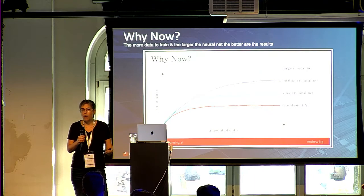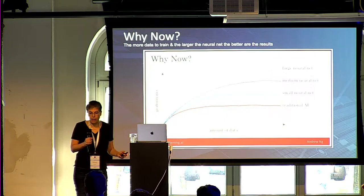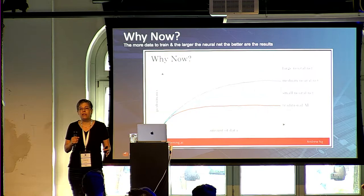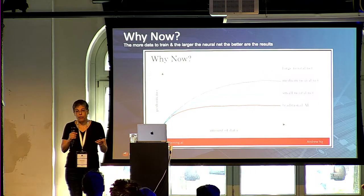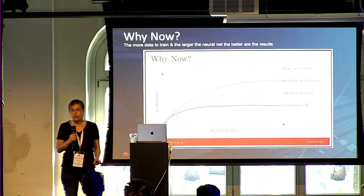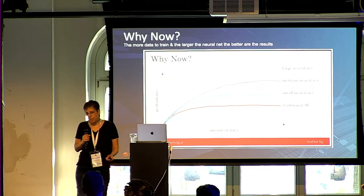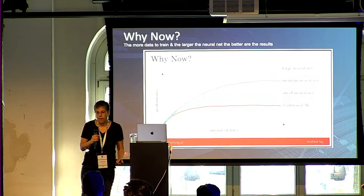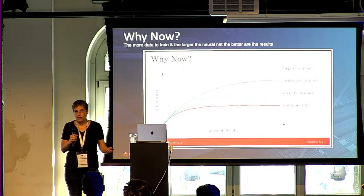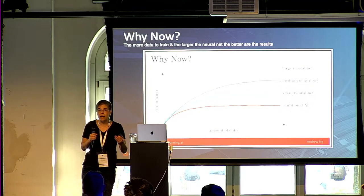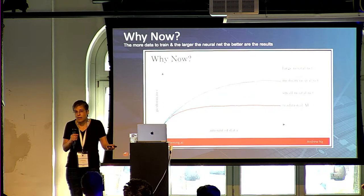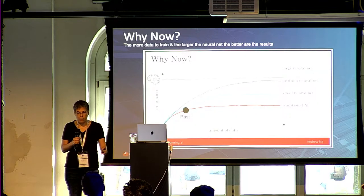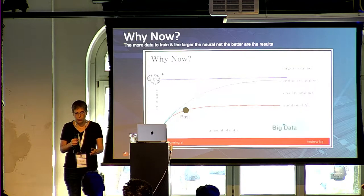Why only in the past decade? Deep learning existed much longer. What happened around 2012 to 2015 was that conditions for a perfect storm emerged. As Andrew Ng from Deep Learning AI illustrates, the more data and the larger the neural network, the better the performance and accuracy. Before, we didn't have enough labeled data. Big data — people uploading and tagging images on Facebook — provided something that simply wasn't available before. That's why in the past we were much below human performance, but with big data, it improved.